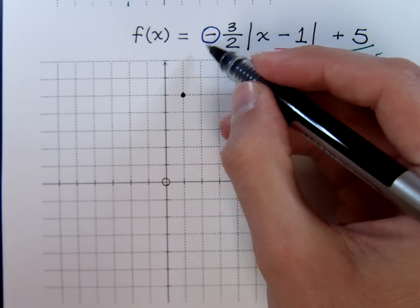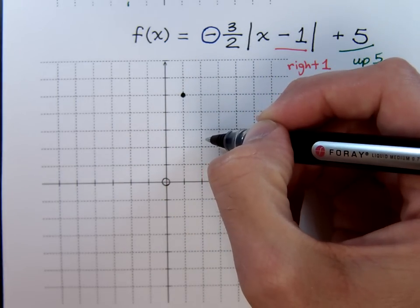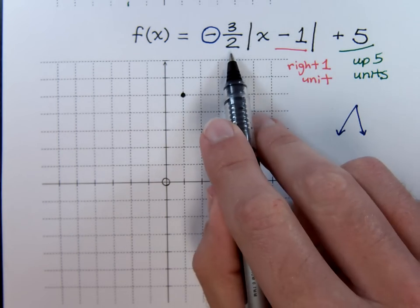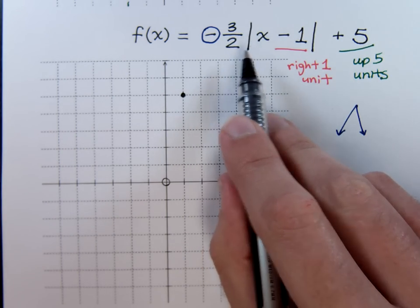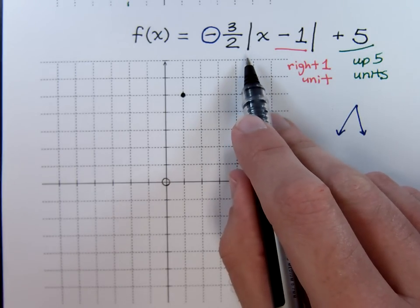Remember the negative says you're going to open down. And we just have to figure out how steep that is. And we get to use the three halves here as a slope. Now you can only use this as a slope for the absolute value function because it's made up of straight pieces. This is the only function where we can really do that.